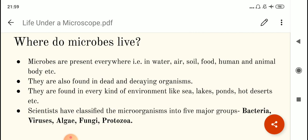Scientists have classified the microbes into five major groups. So on the basis of the type of microbes, we can classify them into five types: Bacteria, virus, algae, fungi, and protozoa.